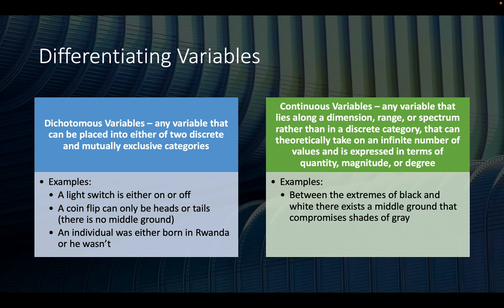Another subject in critical thinking is differentiating variables. There are usually two types: dichotomous variables and continuous variables. With dichotomous variables, we can take any variable and place it into either of two discrete or mutually exclusive categories. For example, a light switch is either on or off — it can't be half on or half off. A coin flip can only be heads or tails. An individual was either born in Rwanda or wasn't. There is no gray area.